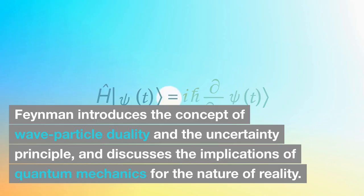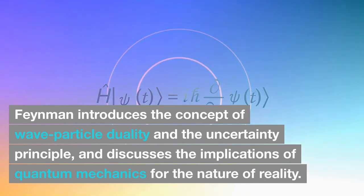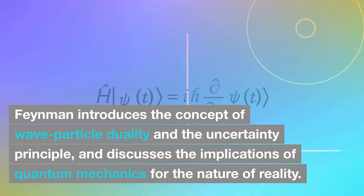Volume 3 covers quantum mechanics and relativity. Feynman introduces the concept of wave-particle duality and the uncertainty principle, and discusses the implications of quantum mechanics for the nature of reality.